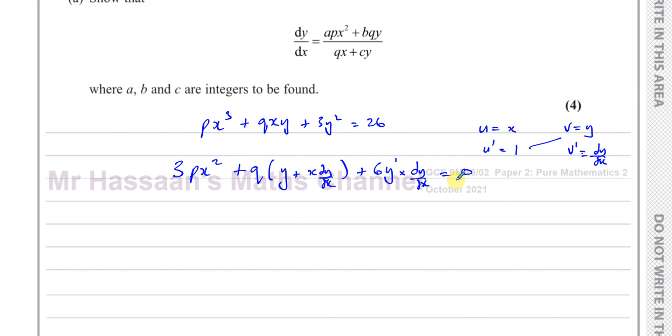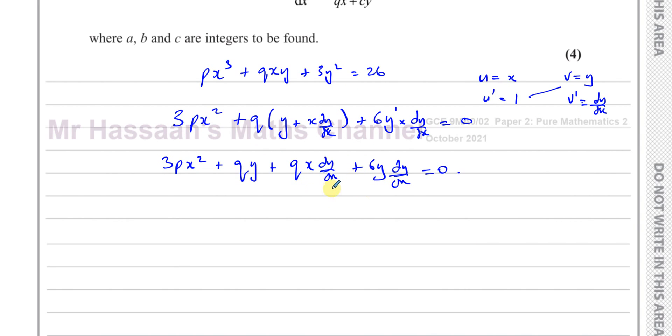So now we've got to make dy/dx a subject of this. So we've got 3px² + qy + qx dy/dx + 6y dy/dx = 0. And now we need to keep dy/dx terms on one side. So I'll keep this qx dy/dx + 6y dy/dx on one side. And I'll subtract these from both sides. So I'll end up with -3px² - qy. And then I can take the common factor here, which is dy/dx.